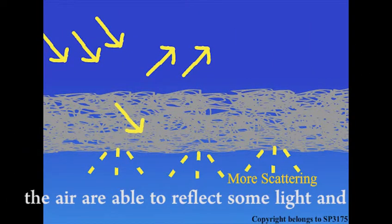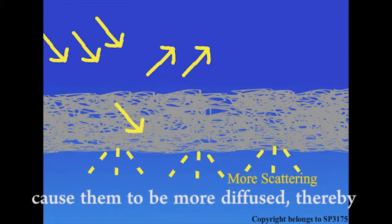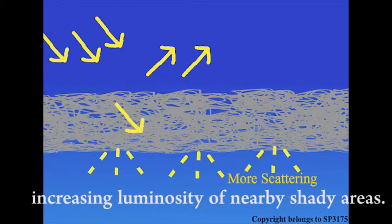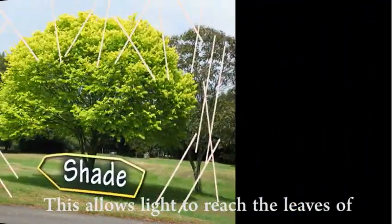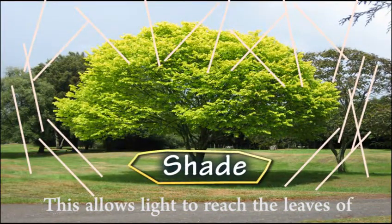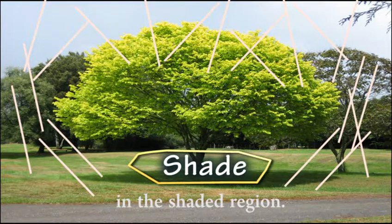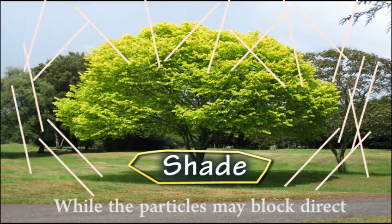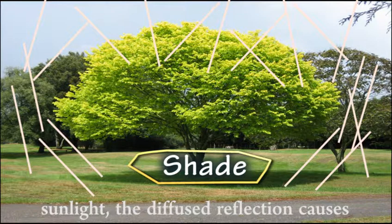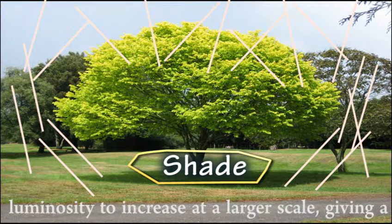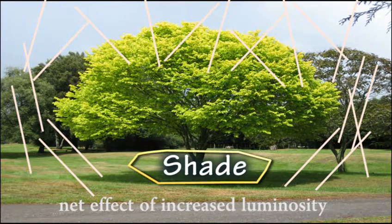We have shown that particles suspended in the air are able to reflect some light and cause it to be more diffused, thereby increasing the luminosity of nearby shady areas. This allows light to reach the leaves of plants that would otherwise be shaded, and thereby increase photosynthesis of plants in the shaded region. While the particles may block direct sunlight, the diffused reflection causes luminosity to increase at a larger scale, giving a net effect of increased luminosity over the entire region. This results in an overall increase of photosynthesis.